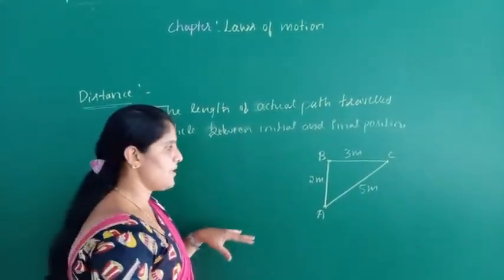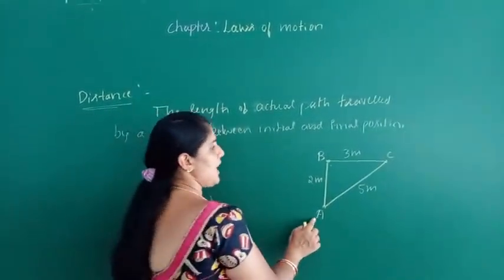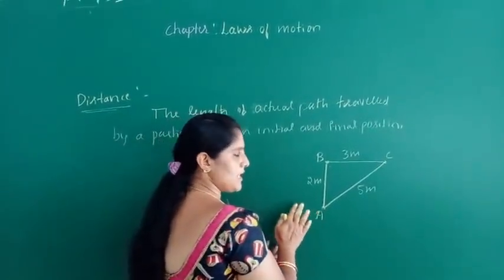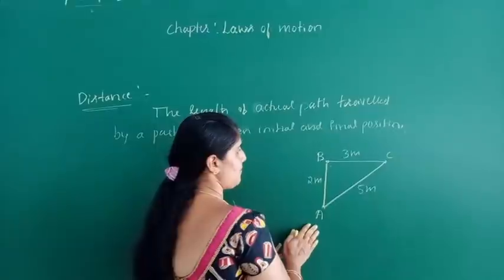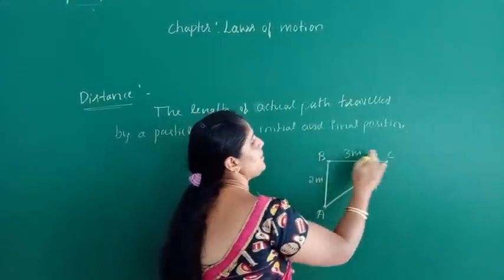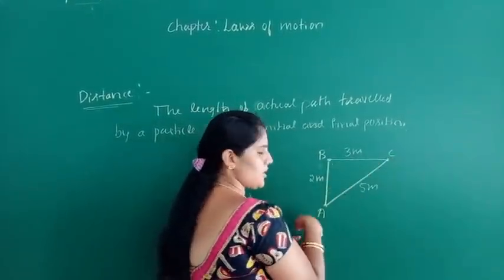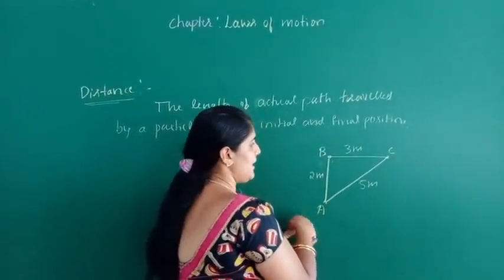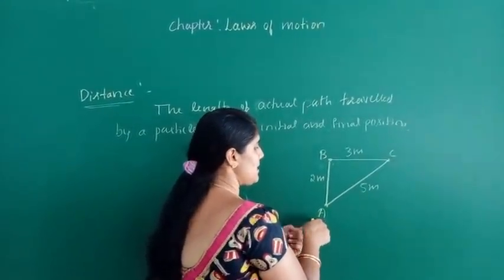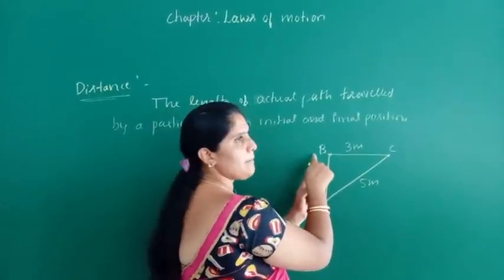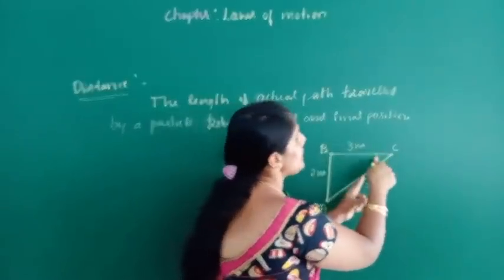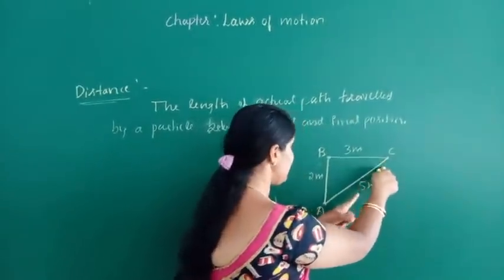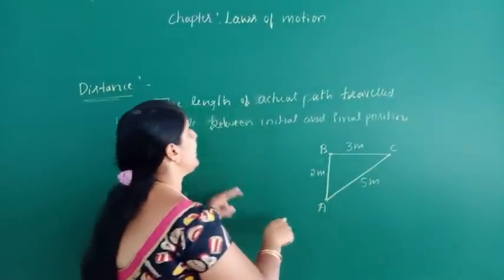Then what is the total distance traveled by the object? The object travels from A to B, B to C, and then back to A. That is, total distance is nothing but AB plus BC plus CA — it is the length of the actual path.